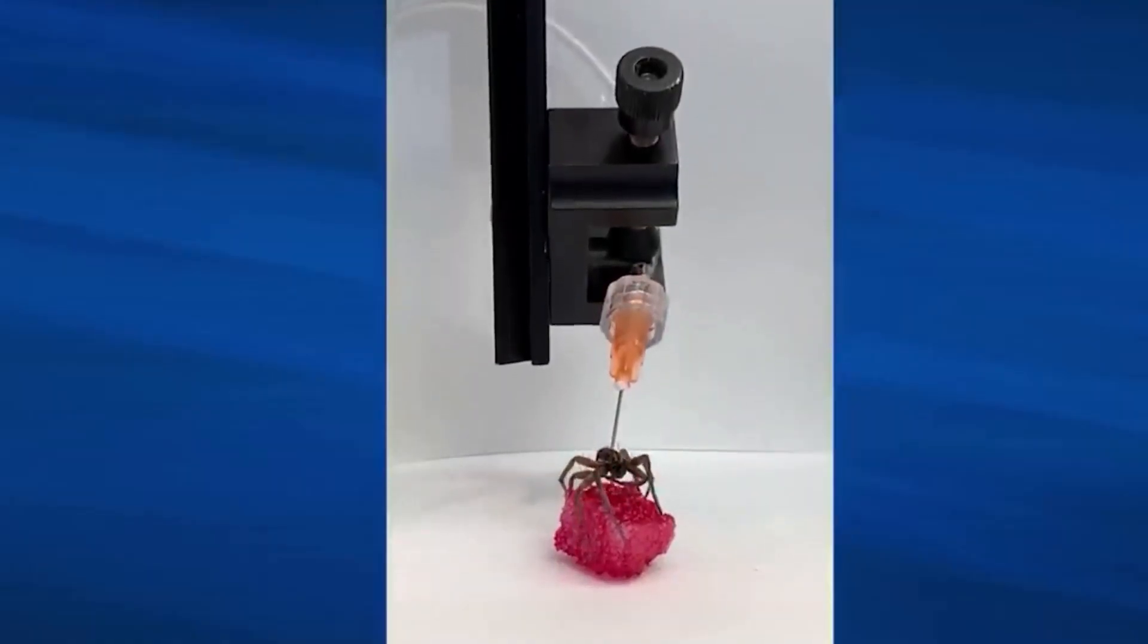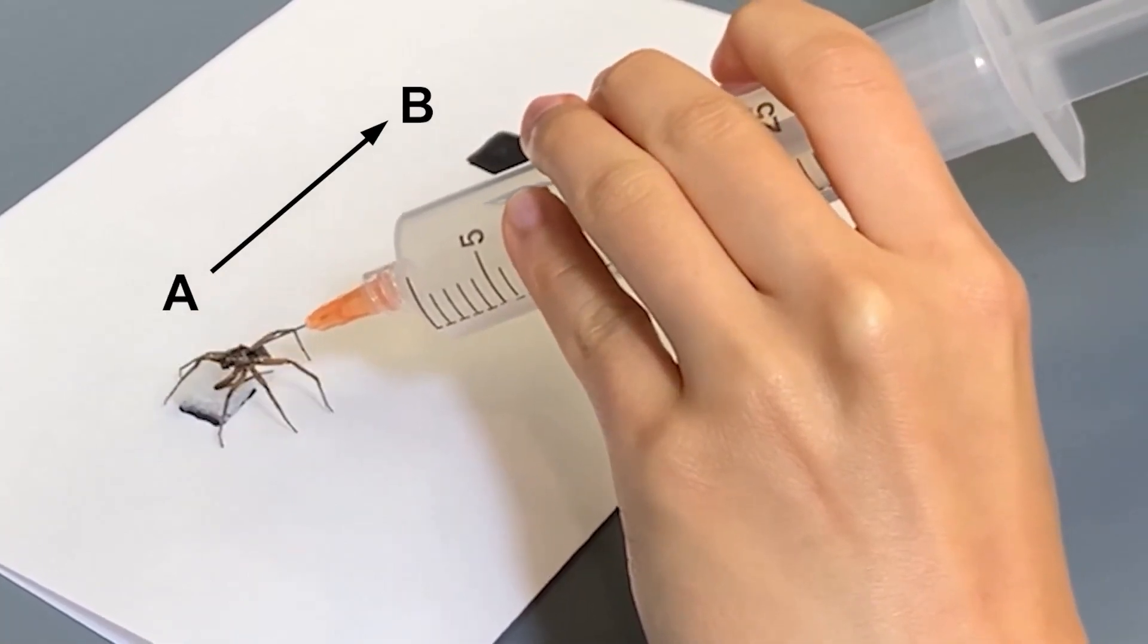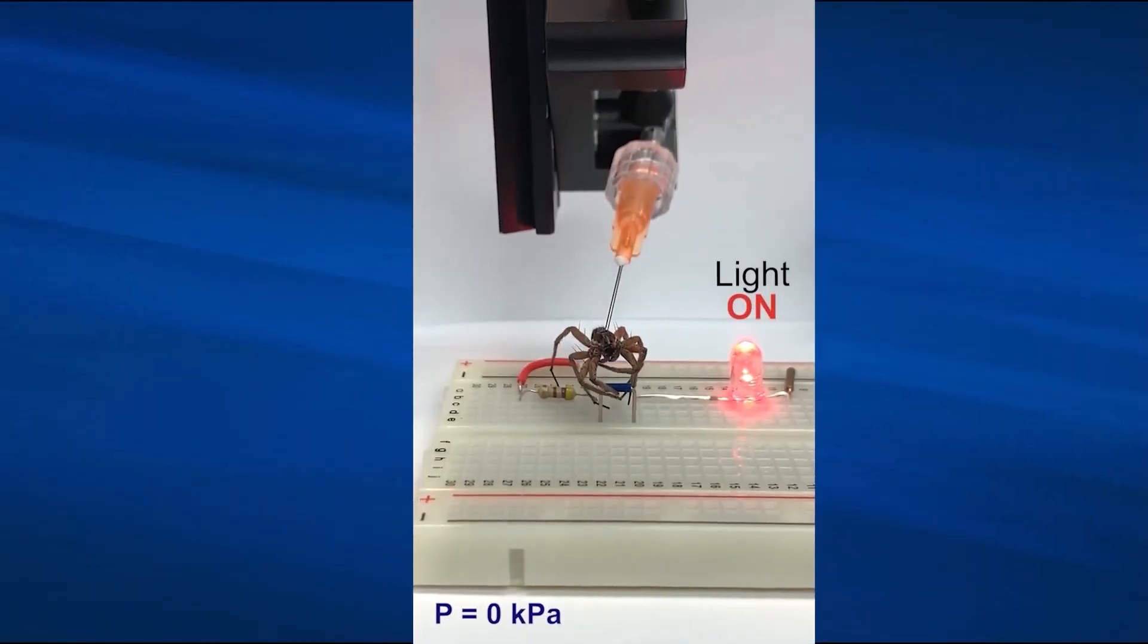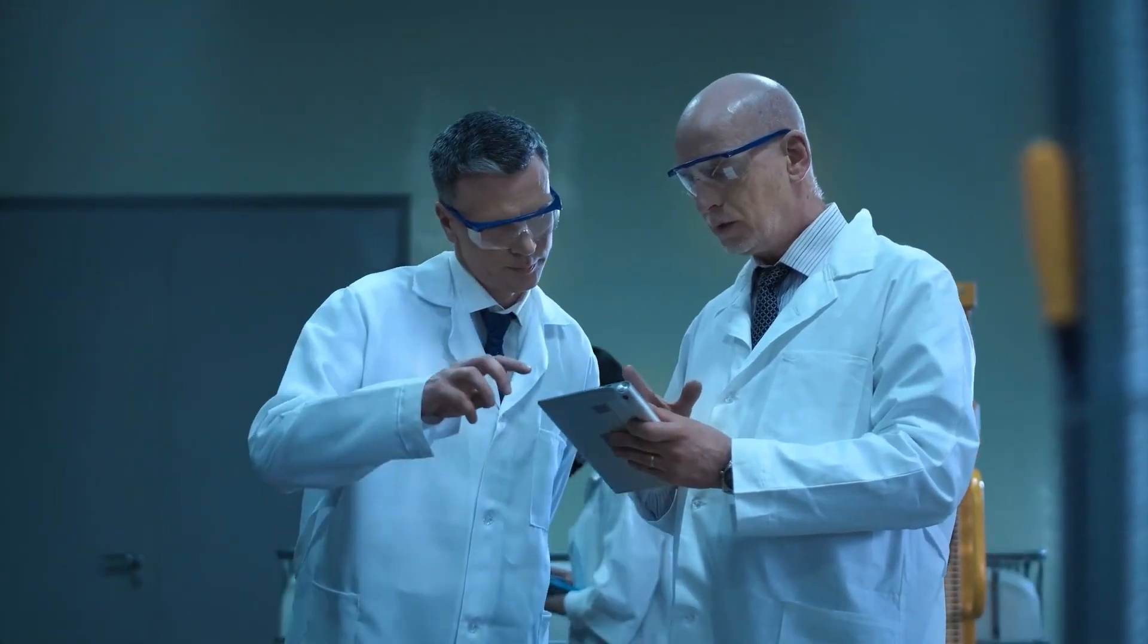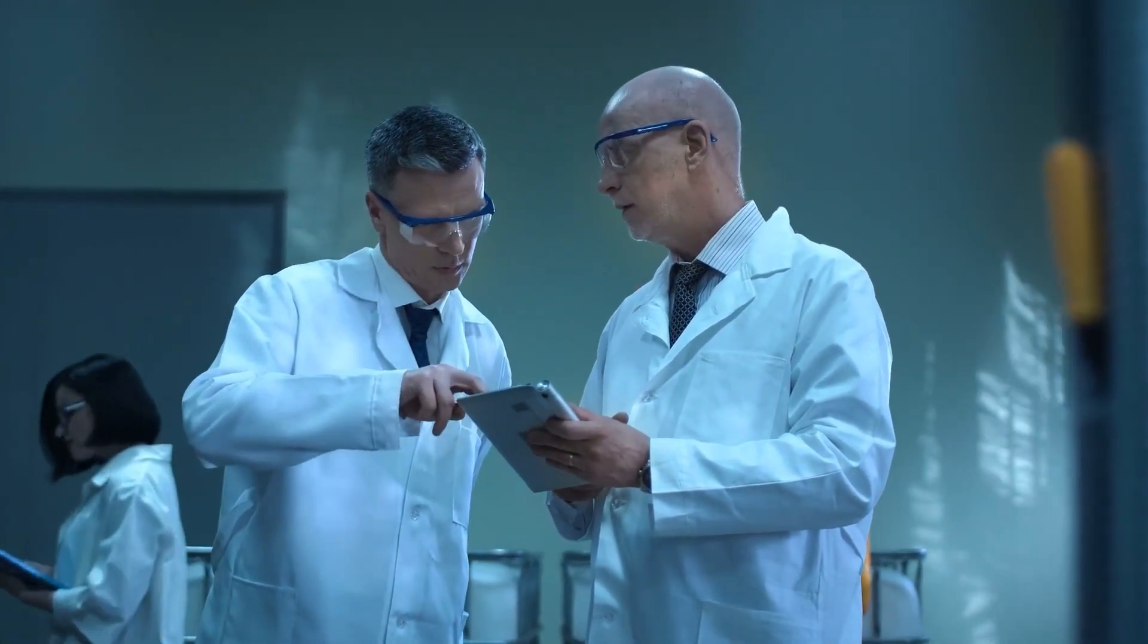The team was able to turn a dead spider into a grabber that works like a robot and can pick up things. Even though this technology is still in its early stages, it has the potential to help scientists learn more about dead animals in the future.